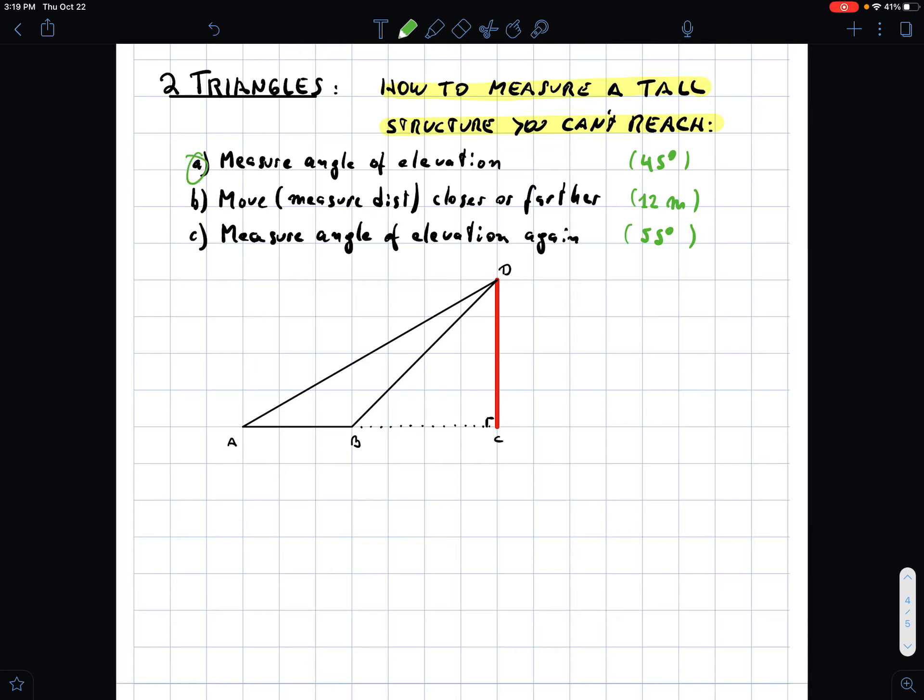One, measure the angle of elevation. Let's say you measure 45, for example. Then you move in a straight line, towards or away from it, and let's say you move 12 meters. And then from that second point, you measure the angle of elevation. Now let's pretend that it's 55.